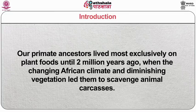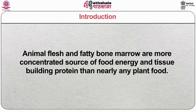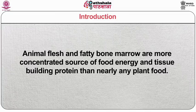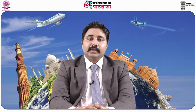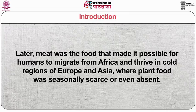The source of that prestige lies deep in human nature. Our primate ancestors lived mostly exclusively on plant foods until two million years ago, when the changing African climate and diminishing vegetation led them to scavenge animal carcasses. Animal flesh and fatty bone marrow are more concentrated sources of food energy and tissue-building protein than nearly any plant food. They helped feed the physical environment of the brain that marked the evolution of early hominids into humans. Later, meat was the food that made it possible for humans to migrate from Africa and thrive in cold regions of Europe and Asia where plant food was seasonally scarce or even absent. Humans became active hunters around one lakh years ago.